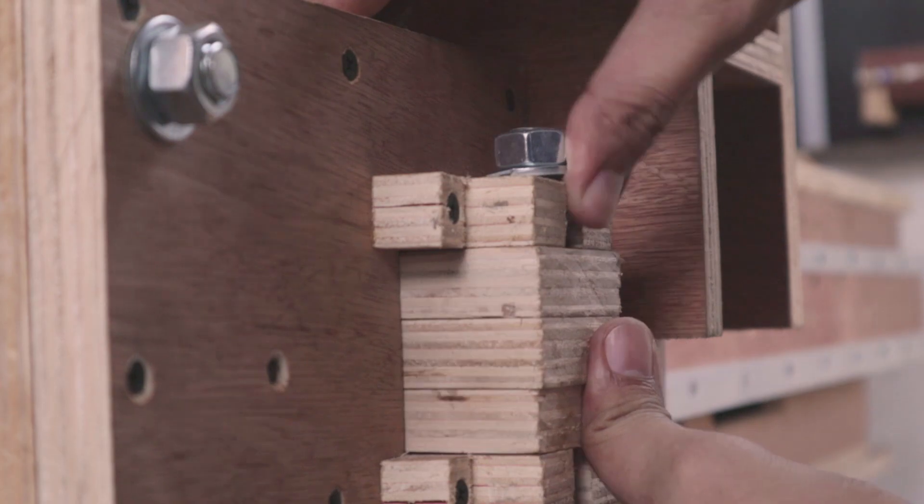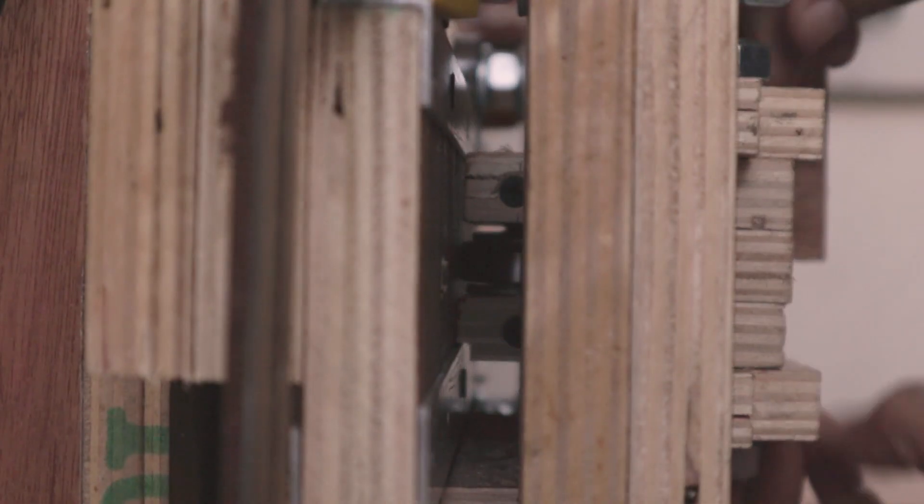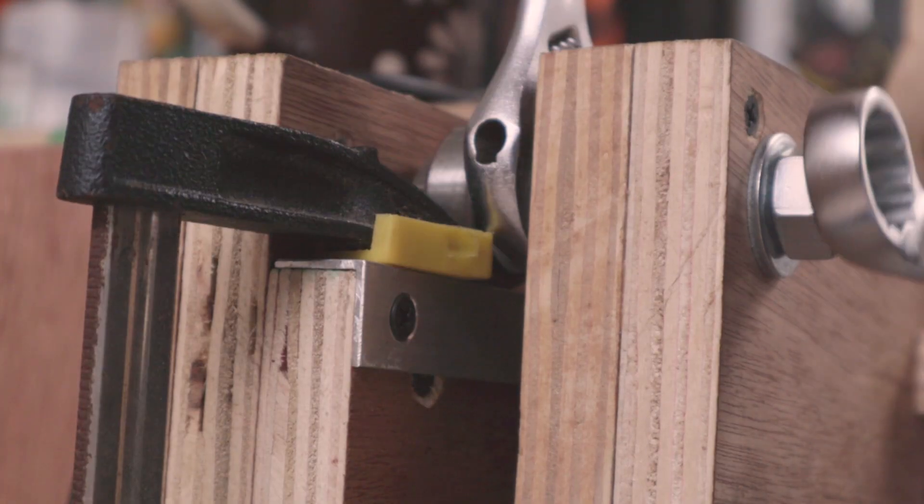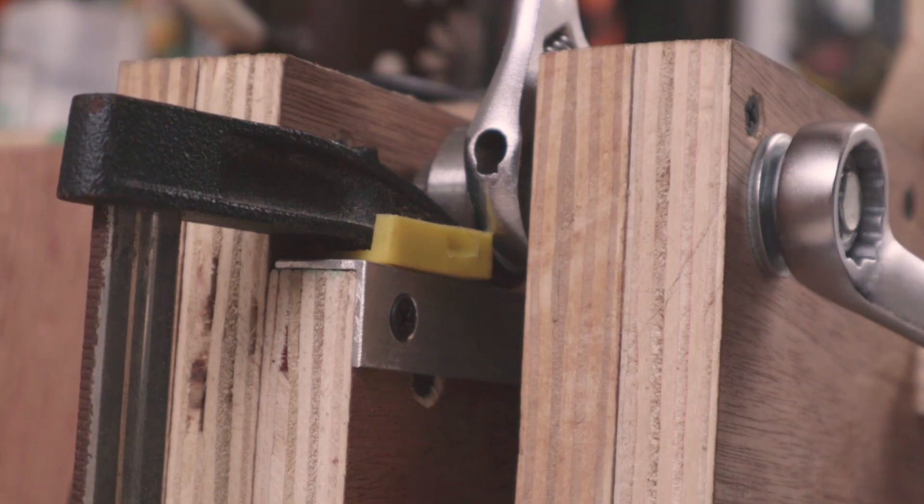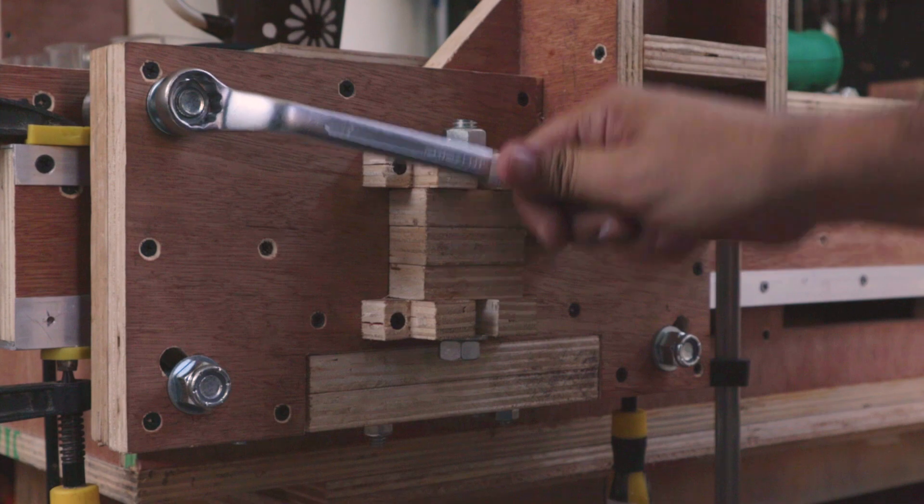This is the guide bearing installed sideways and it will hold the gantry from falling over to the side. It can be removed and can be adjusted accordingly depending on how tight or loose to achieve a smoother sliding movement on the guide rail.